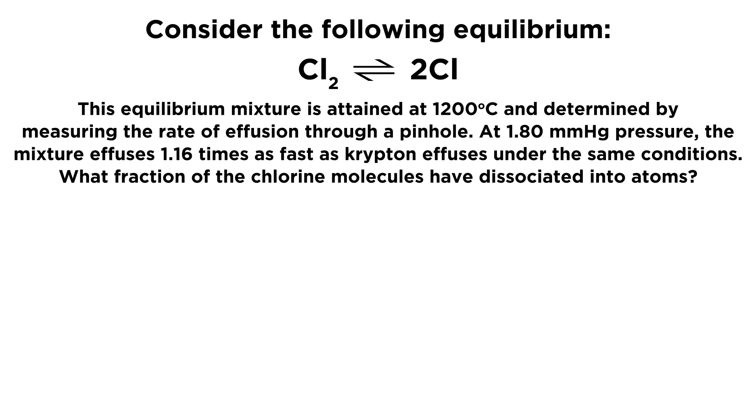So we should be able to figure something out, right? We know that whether we have diatomic chlorine or chlorine radicals, where that equilibrium lies is going to inform how many particles are in the system. The number of particles in the system is going to tell us something about the molar mass, the average molar mass of the particles in the system, which is going to inform how quickly this mixture effuses.